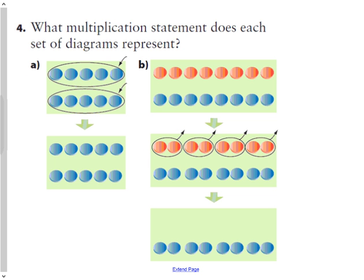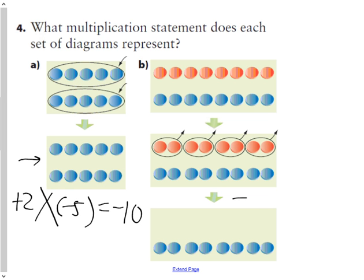Question number four: what multiplication statement does each set of diagrams represent? Here in A, we are adding two groups of negative 5, and when we add two groups of negative 5 to nothing, we end up with a group of negative 10, which is represented right here. In the second one, we start with zero again, but this time we remove four groups of positive 2, and when we remove four groups of positive 2, we're left with negative 8 right here.